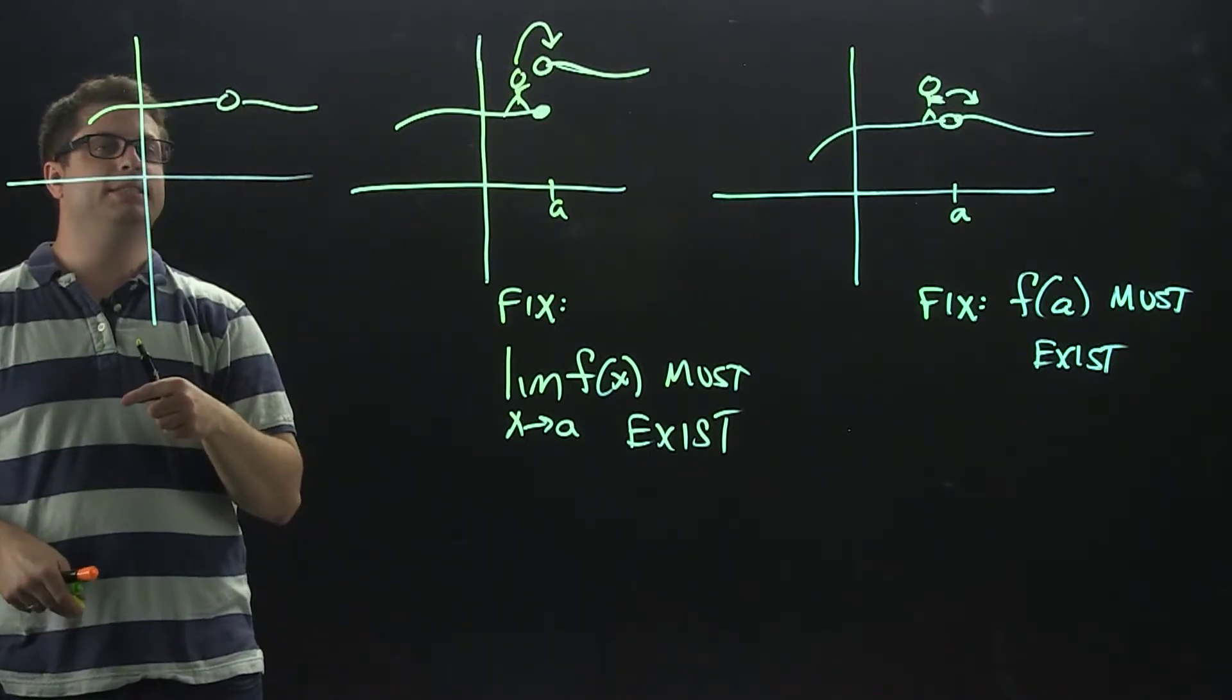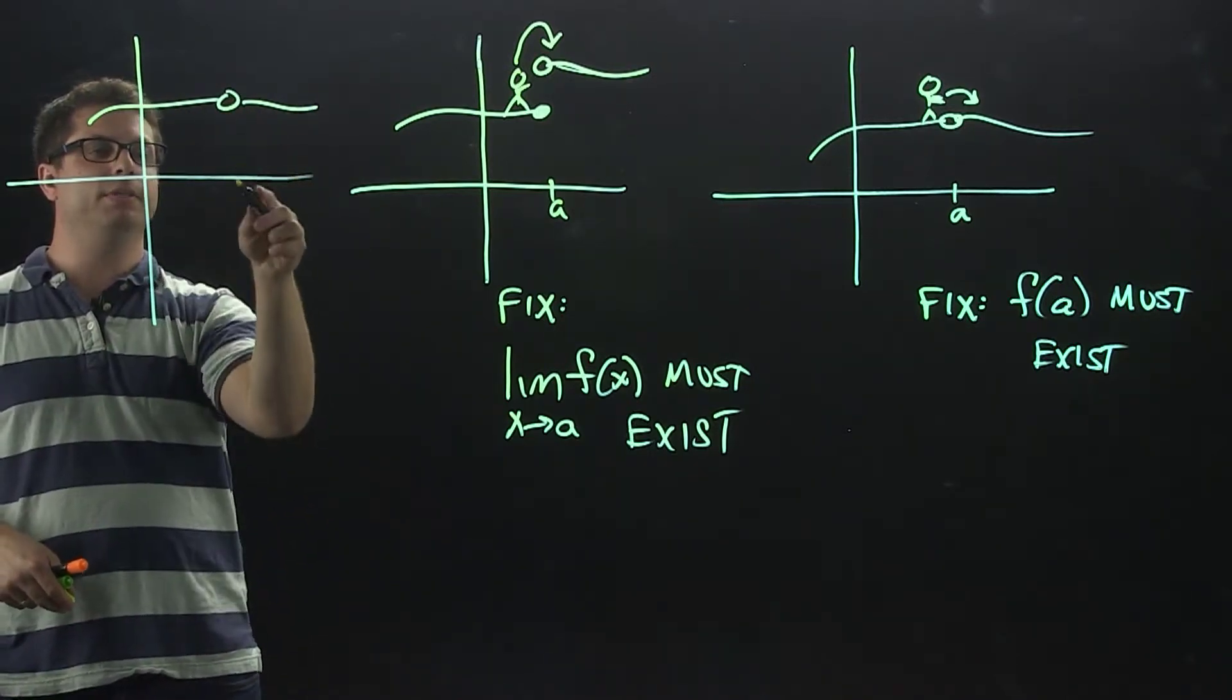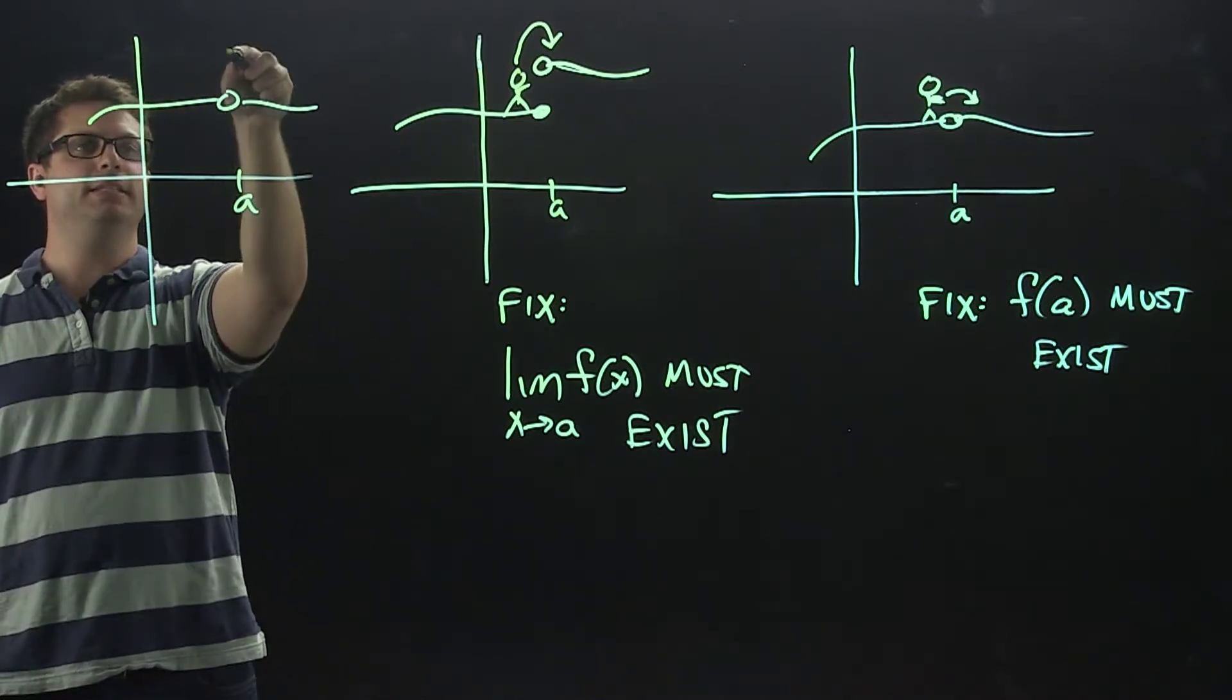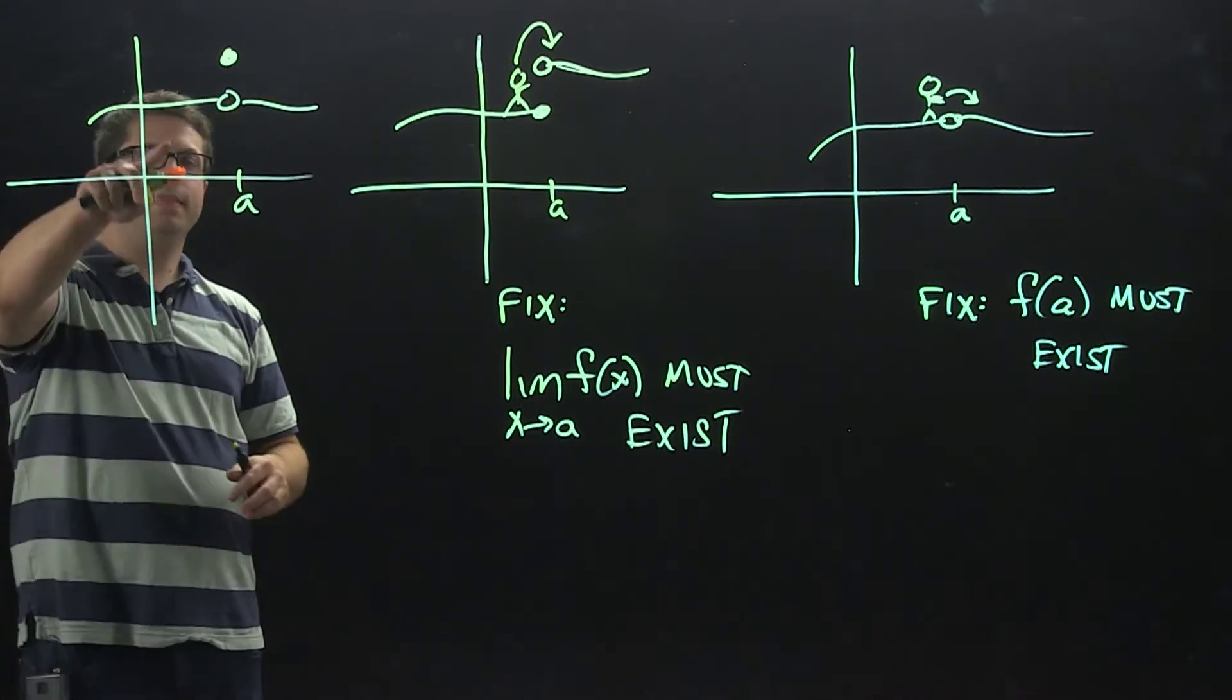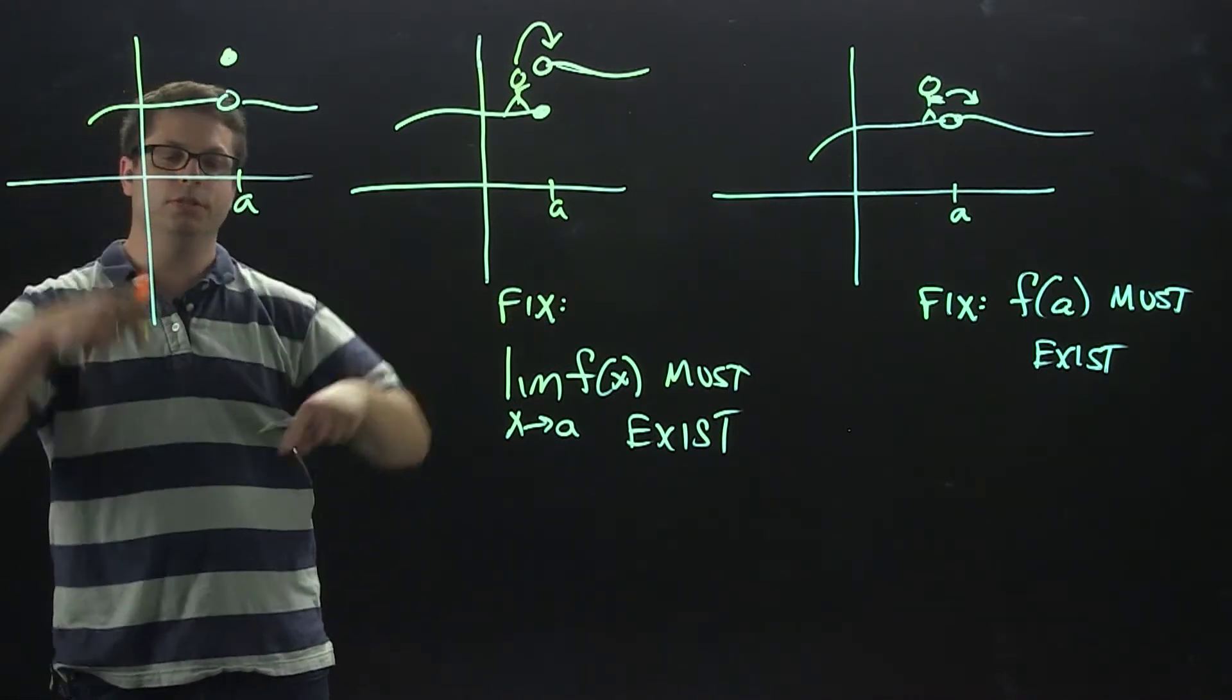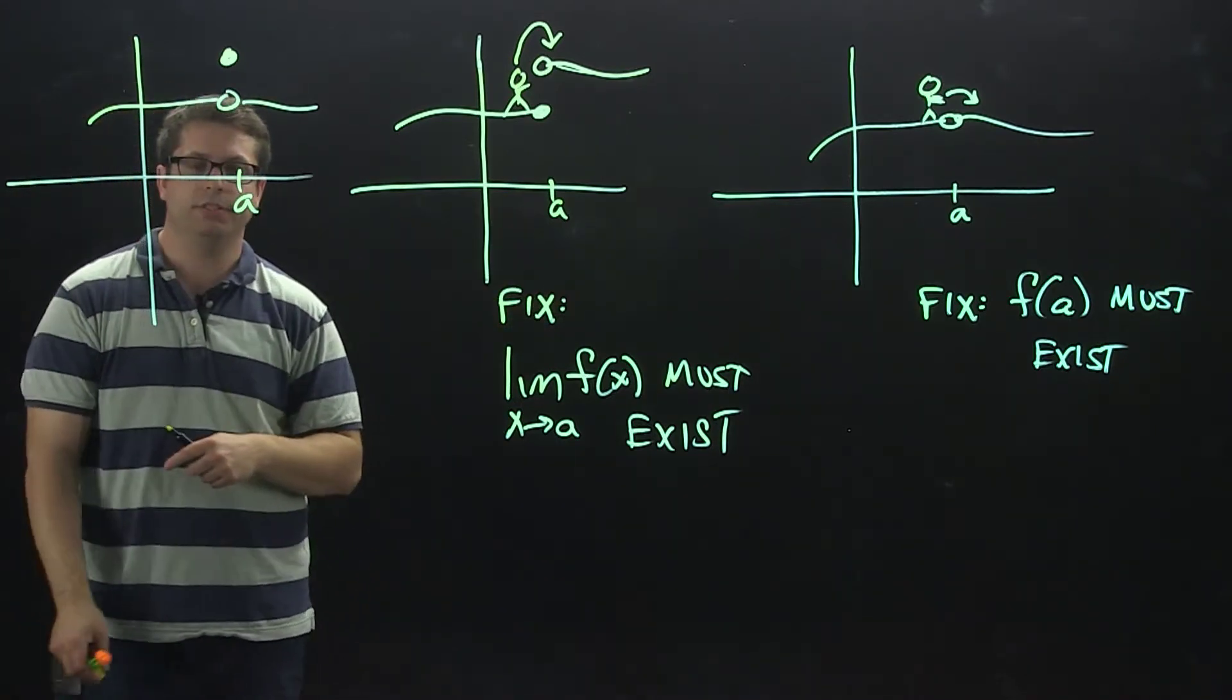In this case, my limit exists. It equals whatever this y value is, but then I'm also going to make f of a exist by putting a closed dot right there. This graph satisfies those two conditions. What's left to fix?